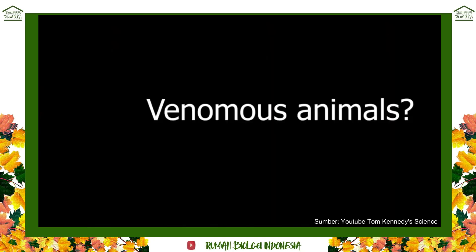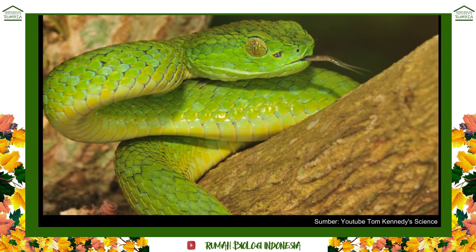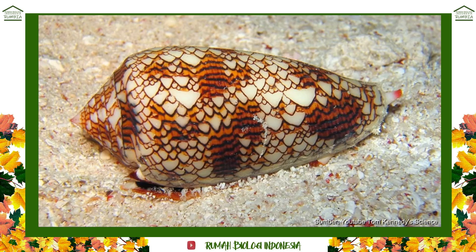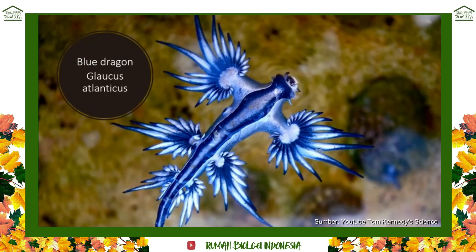When we think of venomous animals, the first thing that comes to mind is usually a snake. However, it turns out that the cone snail is actually very venomous. They have a modified harpoon that they can shoot at their prey to paralyze it — so these are active predators. Be careful if you pick one up, because they can deliver a really powerful sting that is capable of killing some people.